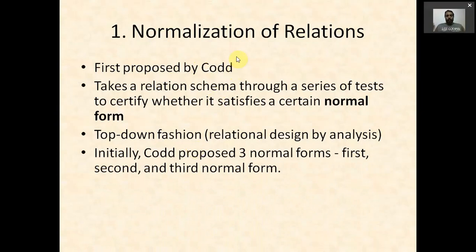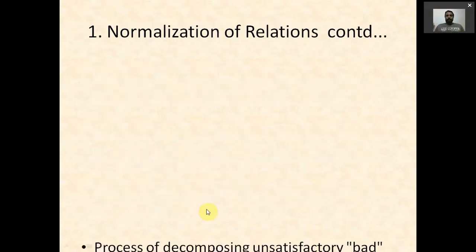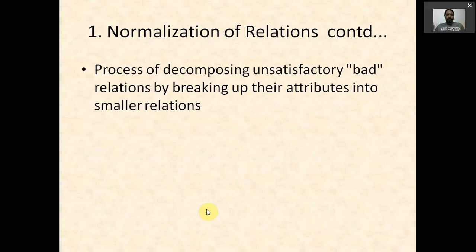Initially, Codd proposed only three normal forms: first, second, and third normal form. Later, Boyce and Codd introduced a new normal form, known as Boyce-Codd Normal Form (BCNF), which is stronger than the third normal form.